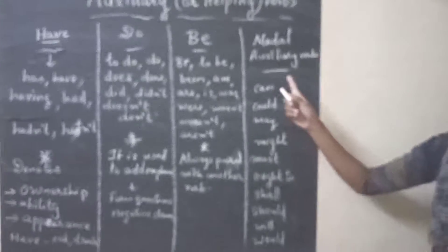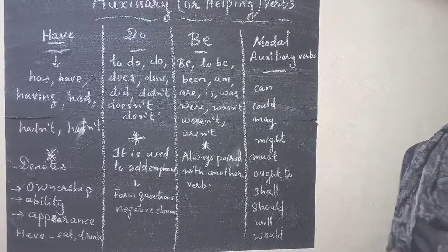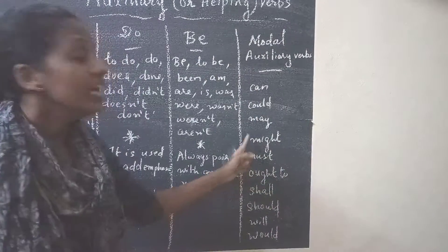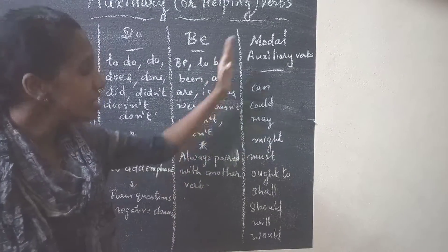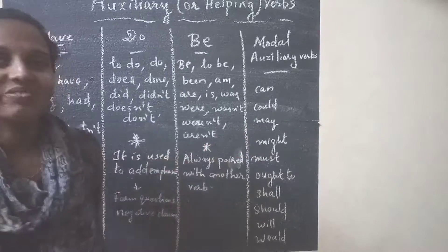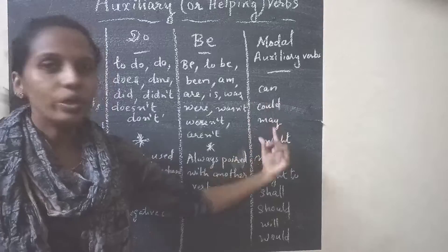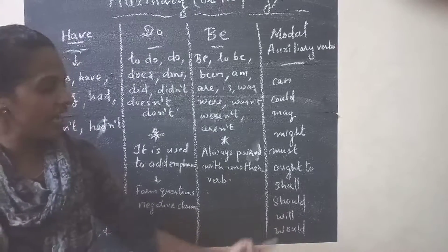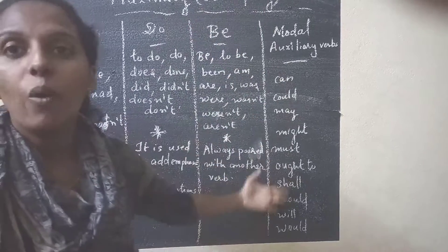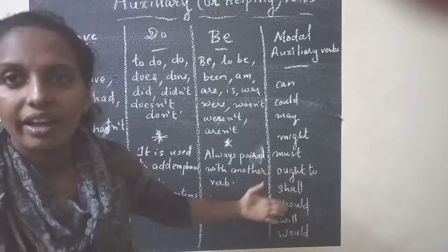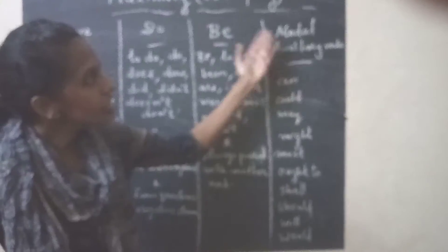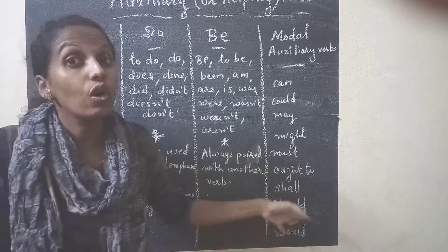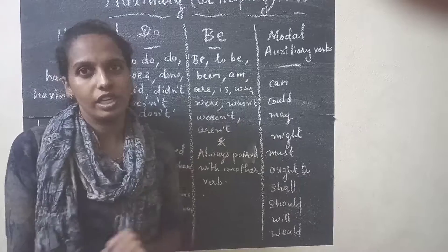Now, the other group is modal auxiliary verbs, which are very important. These are separate from the others. The modal auxiliary verbs are: can, could, may, might, must, ought to, shall, should, will, and would. I will explain modal auxiliary verbs in my next video so that you will know where to use them.